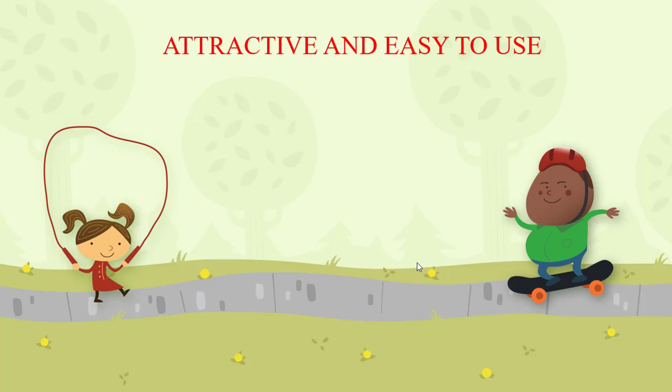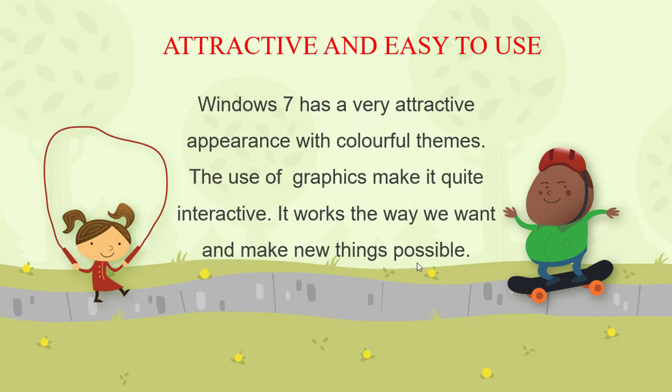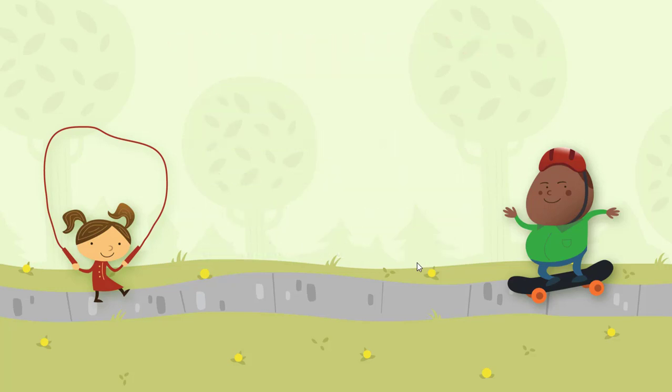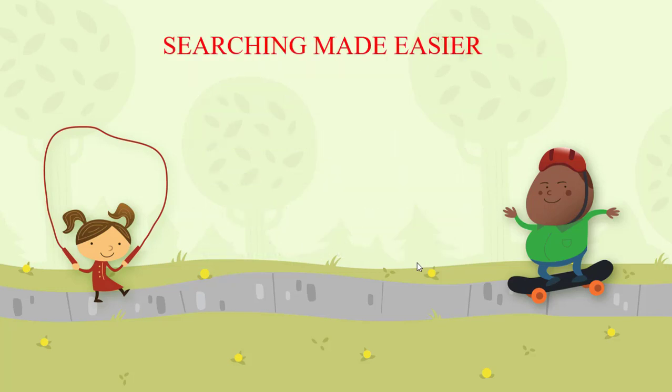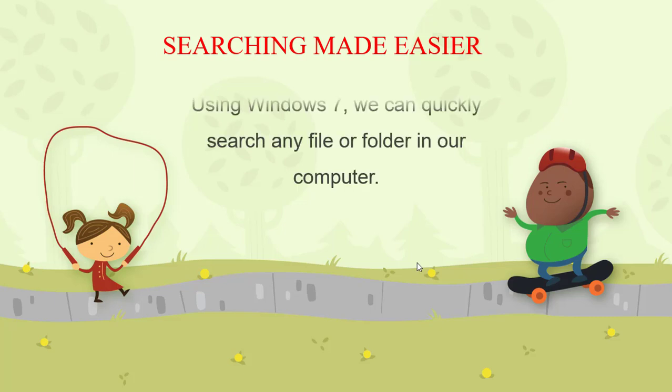Feature one is attractive and easy to use. Windows 7 has a very attractive appearance with colorful themes. The use of graphics makes it quite interactive. It works the way we want and makes new things possible. This is the first feature of Windows 7.